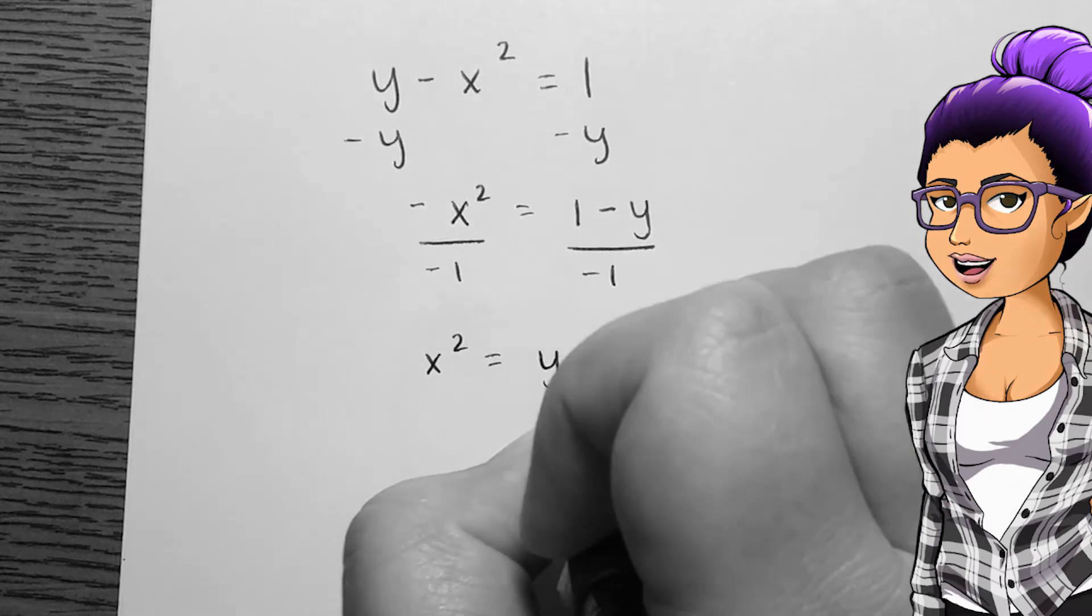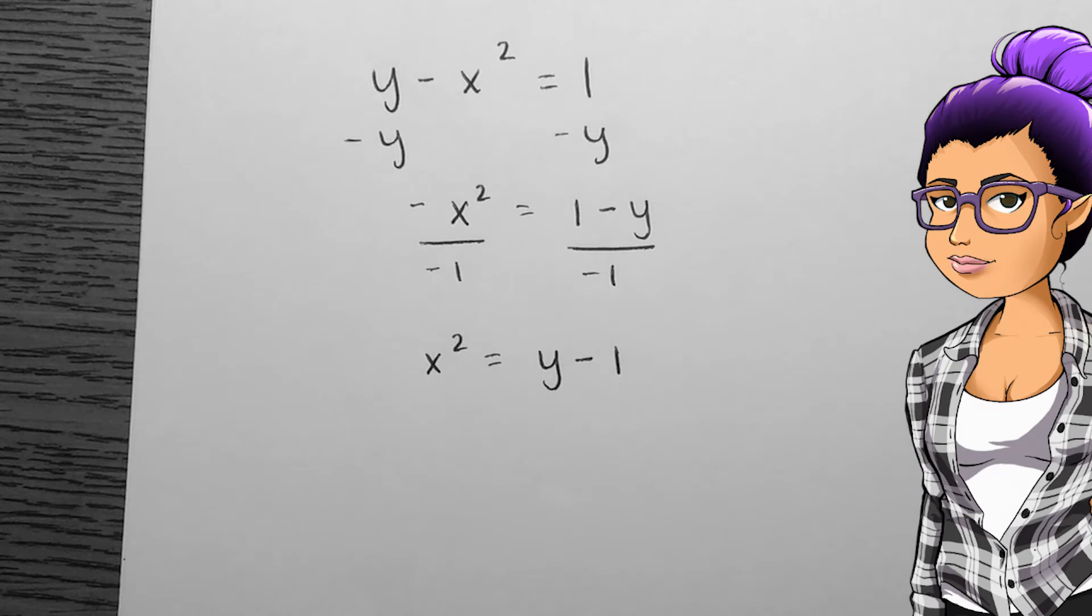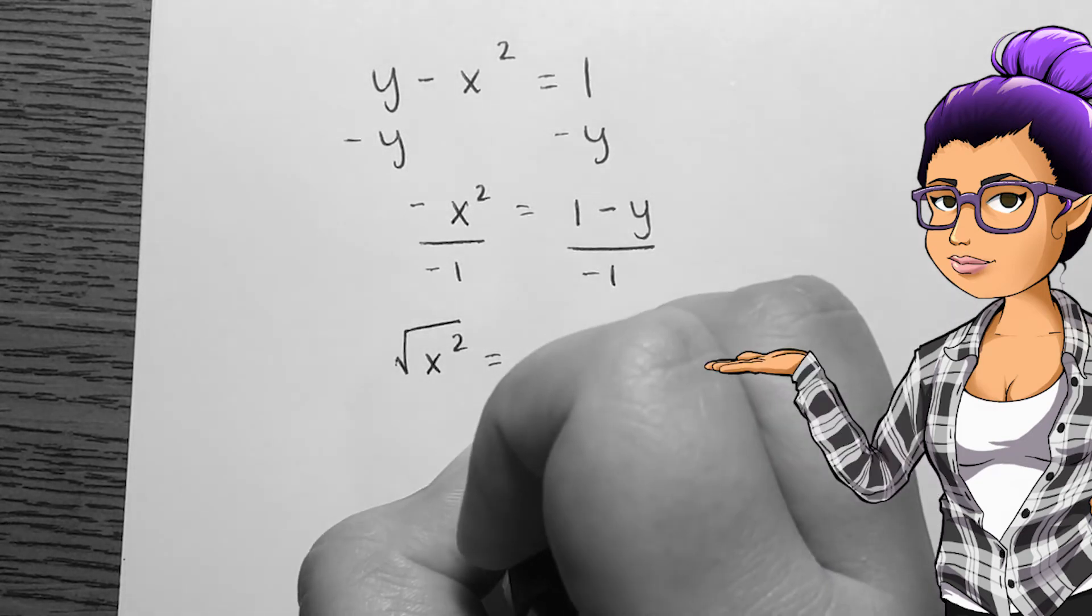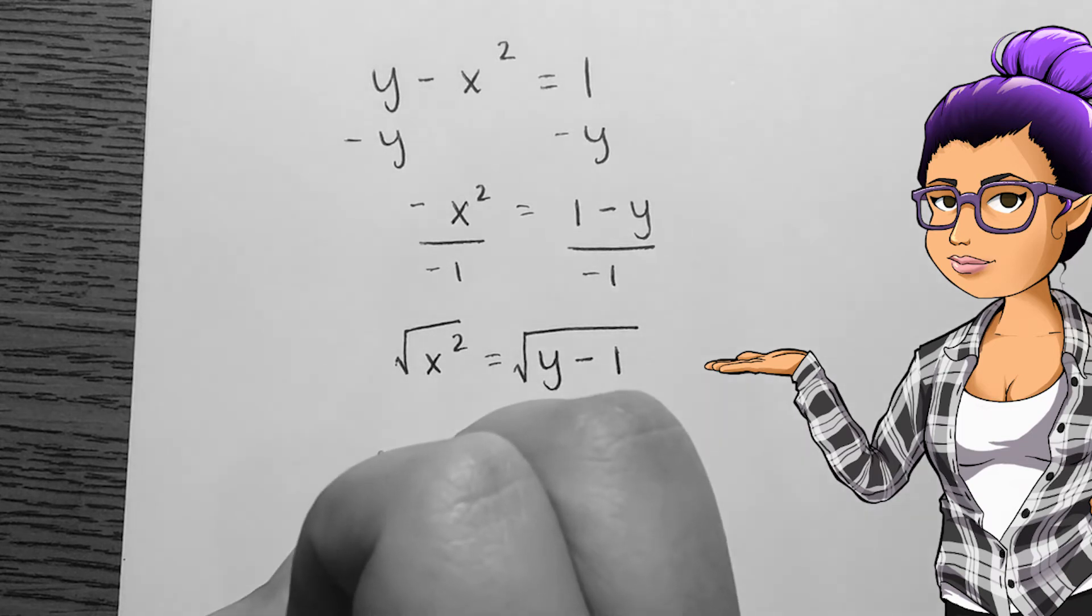If I subtract y from both sides then divide by negative 1, I'm left with x squared equals y minus 1. In order to isolate x, I need to take the square root of both sides.